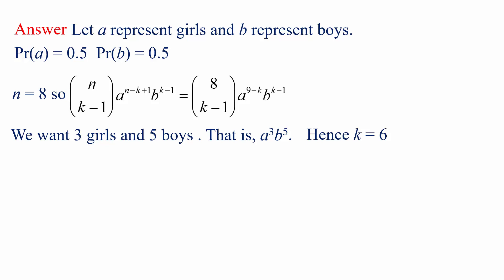Now, we want three girls and five boys. That means we want the term to be A to the power of 3 B to the power of 5. Can you see why K has to equal 6 in the expression to give us A to the power of 3 B to the power of 5? Because in the previous line we have, at the end, A to the power of 9 minus K. Now, we want 9 minus K to equal 3, don't we? So that means K must be 6.